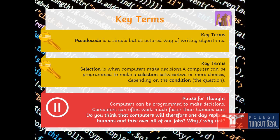Key terms. Pseudocode is a simple but structured way of writing algorithms. Selection is when computers make decision. A computer can be programmed to make a selection between two or more choices depending on the condition or on the question we have done. Computers can be programmed to make decisions. Computers can often work much faster than humans can. Do you think that computers will therefore one day replace humans and take over all of our jobs? Why? Why not? This will be commented in Edmodo. I will post it as a comment.